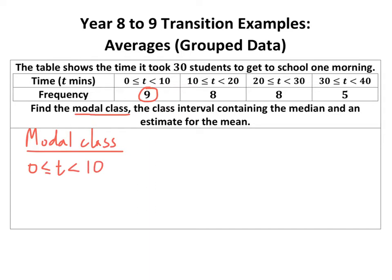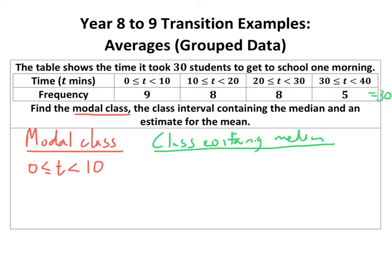Next is the class containing the median. To find the median we put data in order and pick the middle value. The data is already in order here — naught to 10, 10 to 20, 20 to 30, 30 to 40. The total frequency adds up to 30, so halfway is at position 15.5. We need to add up the frequencies until we pass halfway.